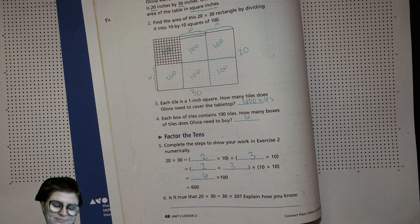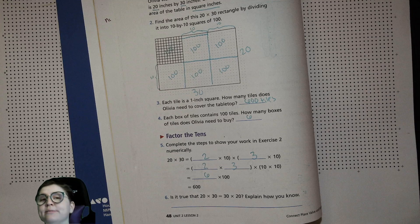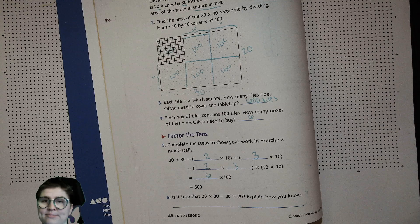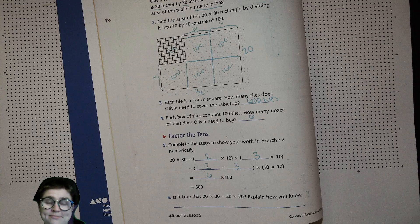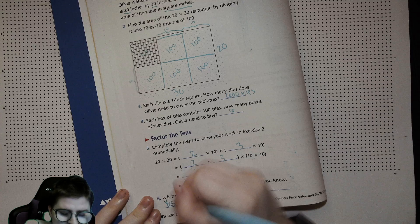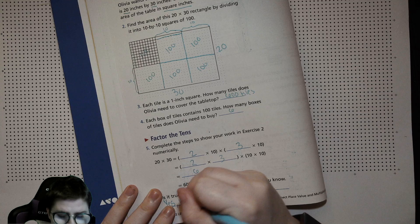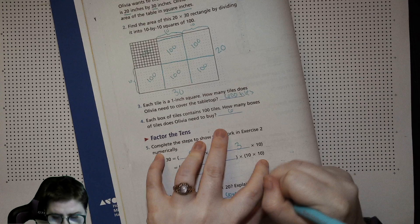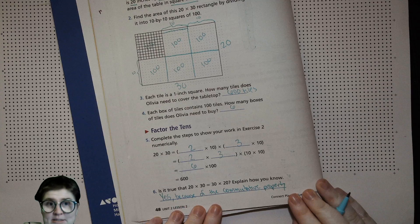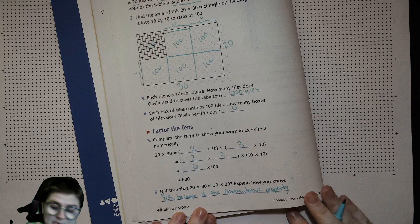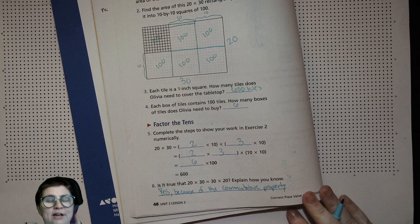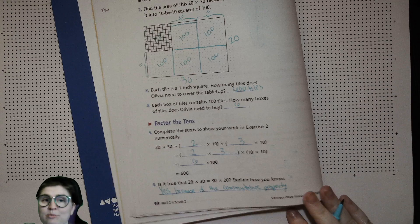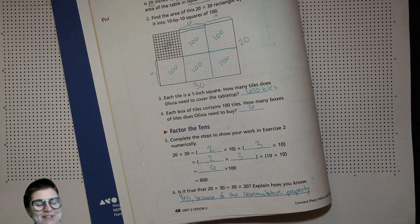Now I want you to think about this: is it true that 20 times 30 equals 30 times 20? The answer is yes, and you could say because of the commutative property. You could also say yes because they both equal 600. You could also say yes because 2 times 3 equals 3 times 2, and 2 times 3 times 100 equals 3 times 2 times 100. There's more than one way to answer that. Go ahead and check if you have an assignment. I'll catch you next time. Have a wonderful day, bye bye.